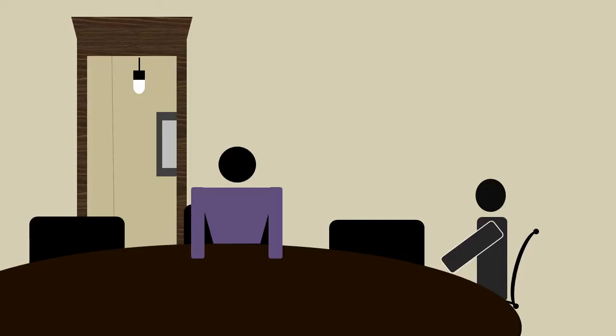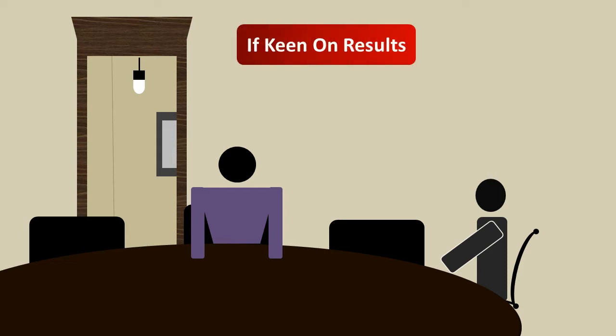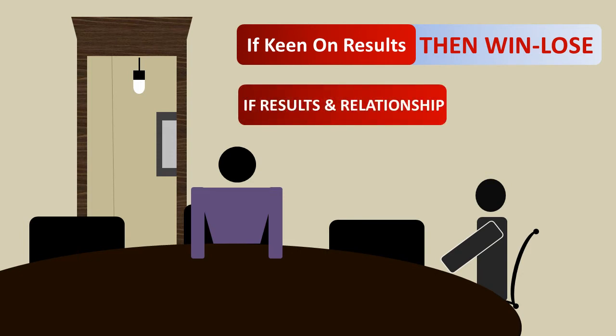Now let's get back to Jack. Jack has two choices. If he's keen on results and wants nothing to do with the relationship, then he will go with the win-lose approach, also known as the distributive style of negotiating. On the other hand, if he wants both results and a relationship with the suppliers, then the win-win approach — also known as the integrative or collaborative approach — will do.